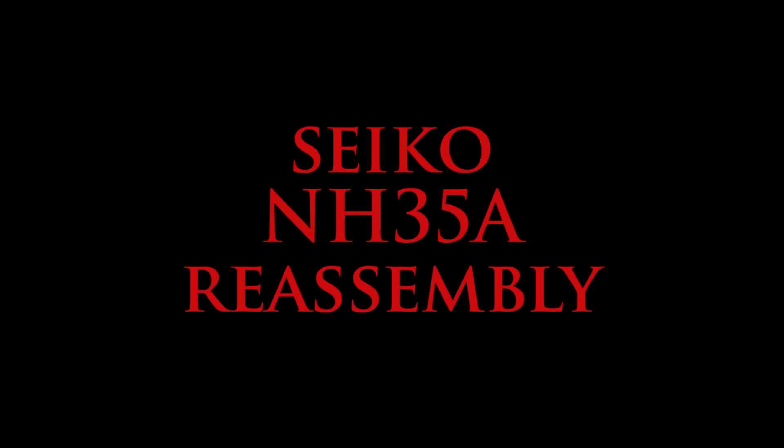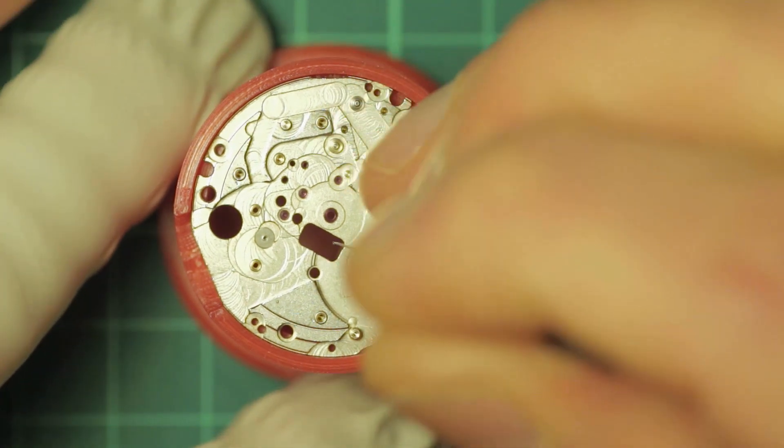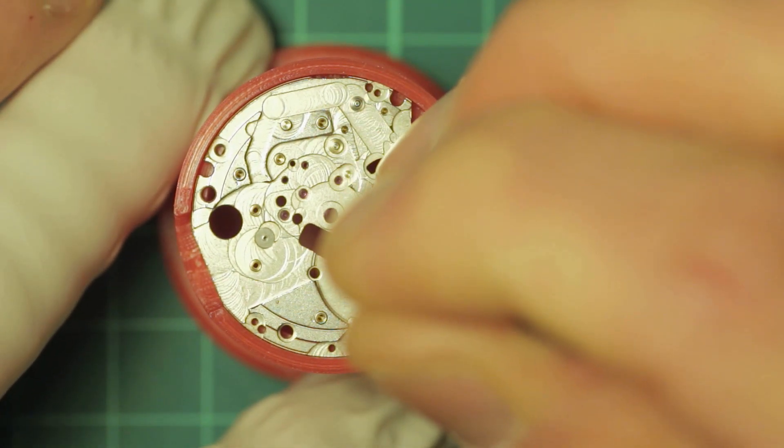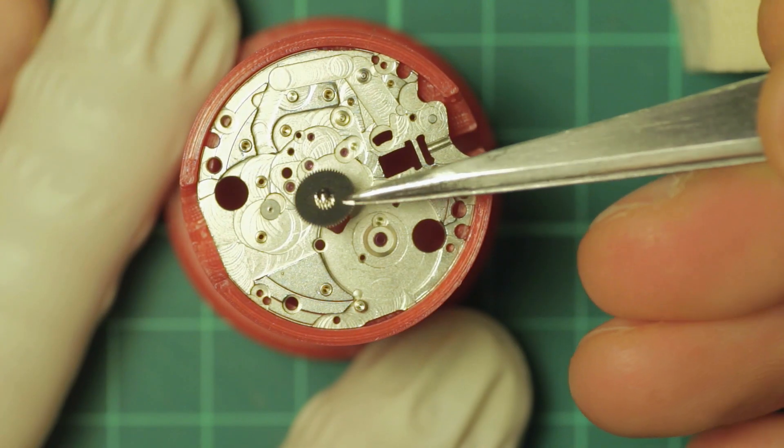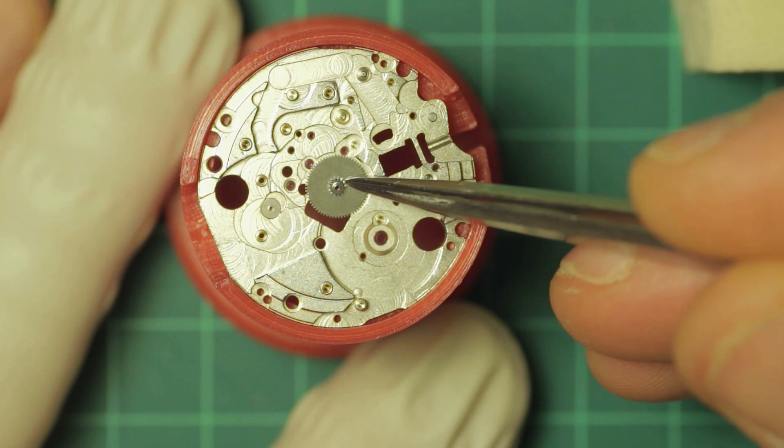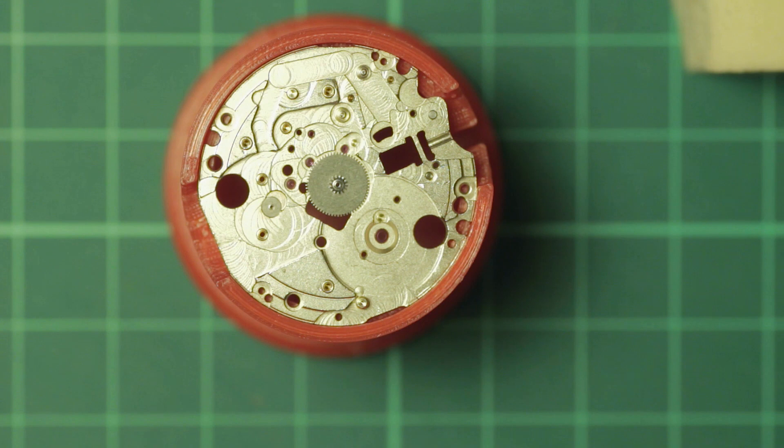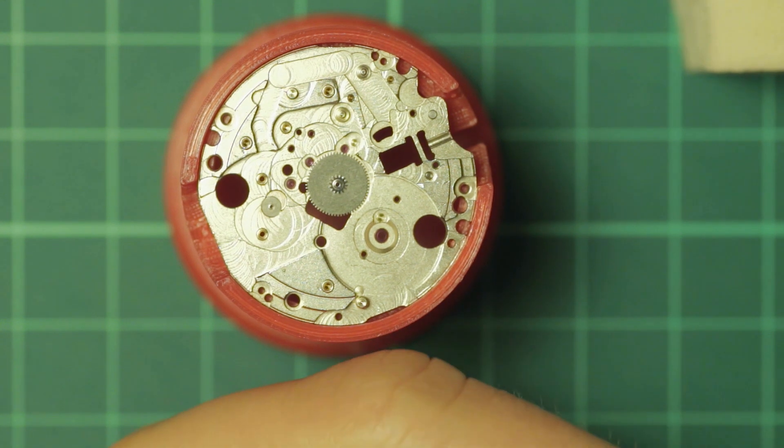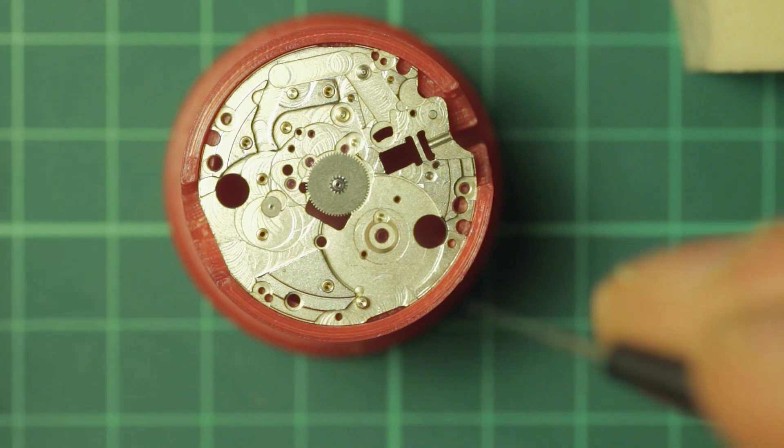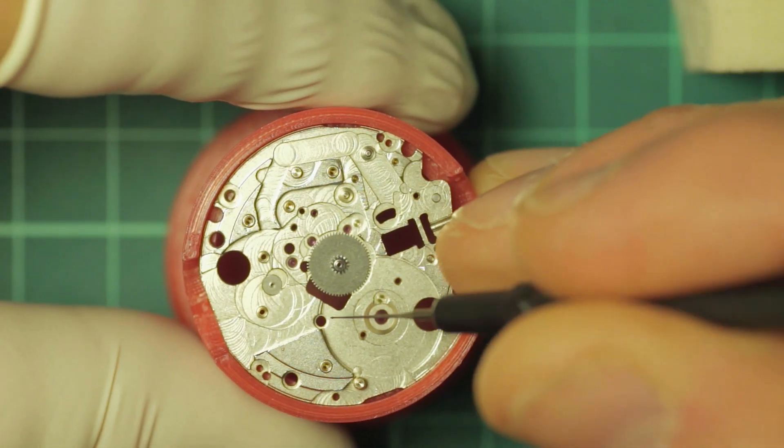Hi and welcome to part two of the Seiko NH35, showing the reassembly of the movement. So we start with the movement side as you can see here, and I'm oiling the center jewel hole. And I'll note at this point I don't actually have or use any Seiko lubricants. I just use Mobius oils, specifically or largely 9010 D5 and grease.